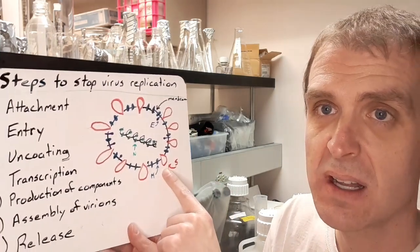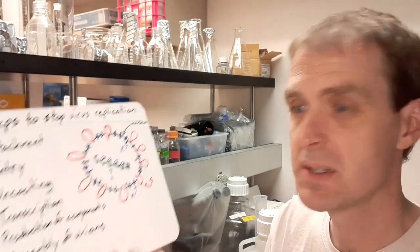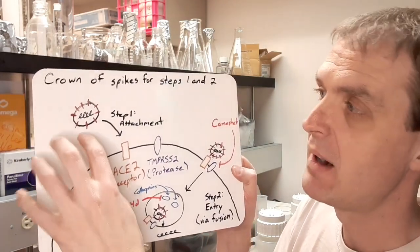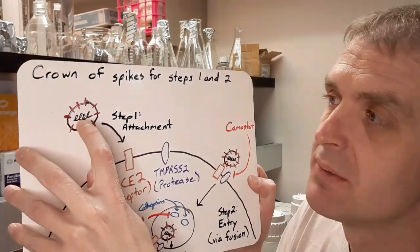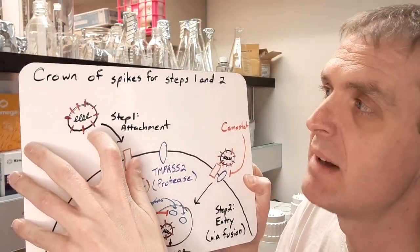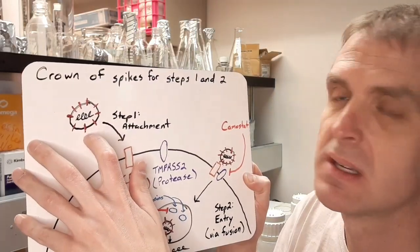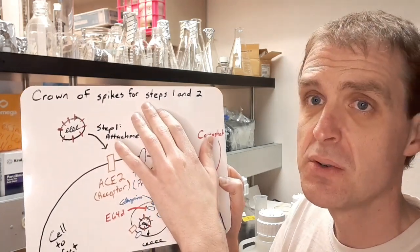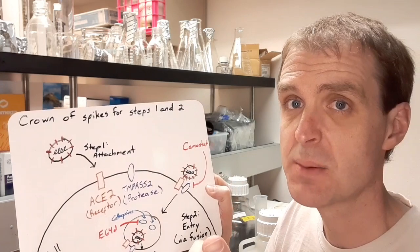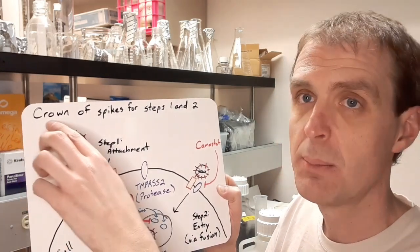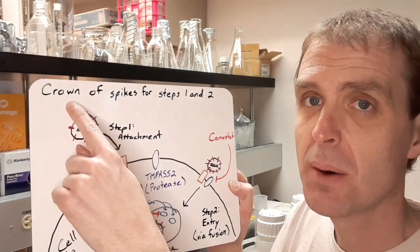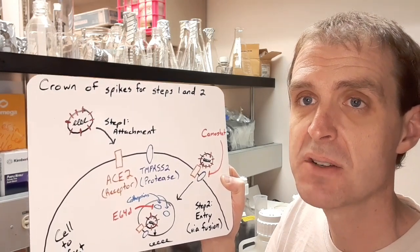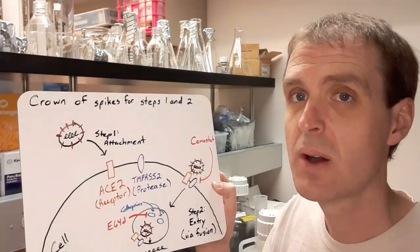Our story today is going to center on these spike proteins on the surface. On this next slide, I have some images of a virus, and I left out most of the proteins. We have the genome in the center, we've got a membrane surrounding it, and then we have the spike proteins, the S proteins, shown as well. The crown of spikes is important for the first two steps of virus replication: the attachment and the entry of the virus. I purposely used the word crown here because corona means crown, and so these spike proteins under an electron microscope make it look like the virus has a crown on it.